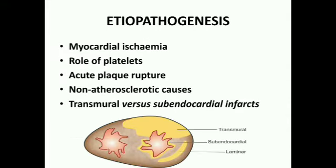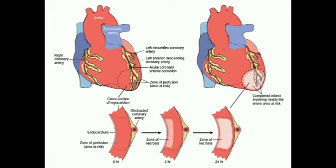Considering etiopathogenesis, severe coronary atherosclerosis with more than 75 percent compromise of the lumen in one or more of the three major coronary arterial trunks is found in the pathogenesis of about 90 percent of cases of acute myocardial infarction, as documented by autopsy studies. This generally affects the left ventricle.